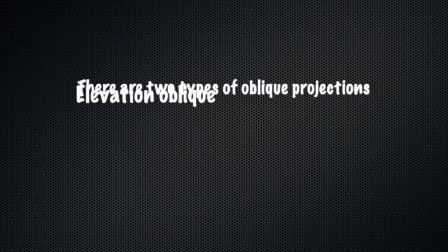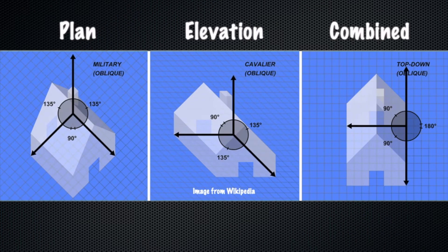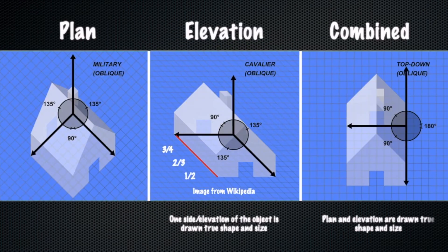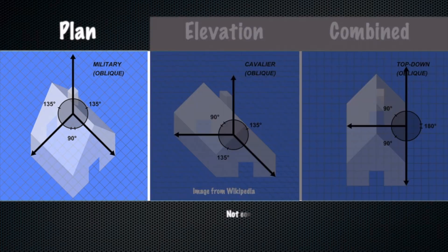The other paralleline drawing subset is oblique projections, and there are two: the plan oblique and the elevation oblique. In elevation oblique, one side or one elevation of the object is drawn true to shape and size, while the other horizontal axis receding from the elevation is typically reduced in scale — that scale can be three-quarters, two-thirds, or even a half. In a plan oblique, the top surface or plan is drawn true to shape and size. It is one of the two most popular and easiest paralleline drawings to construct. The isometric and plan oblique are used most often for architectural drawings.